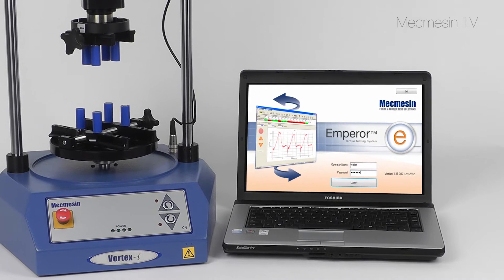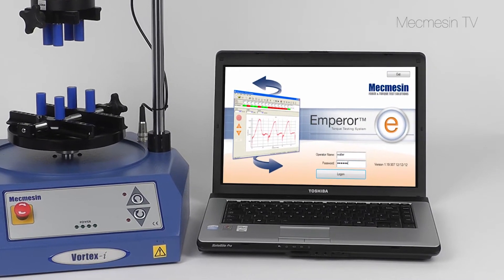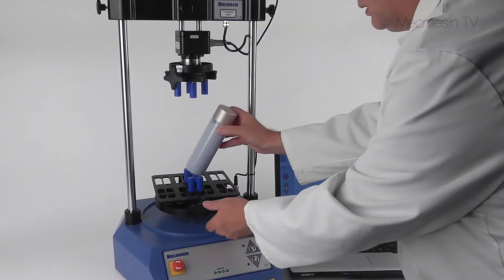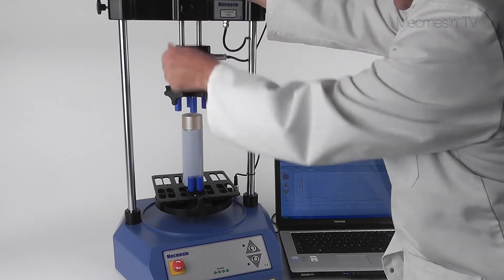At the heart of the Vortex Eye system lies Emperor software, which controls the movement of the mounting table, collects and stores the data, calculates the required results and prints reports the way you want to see them.